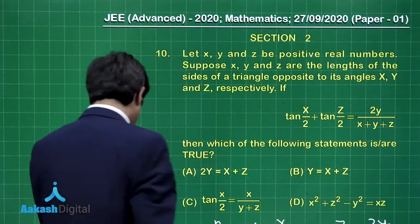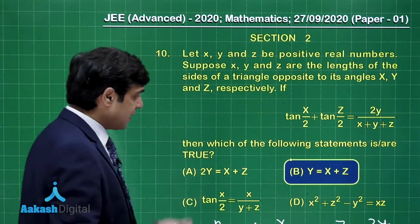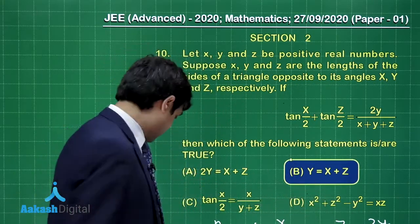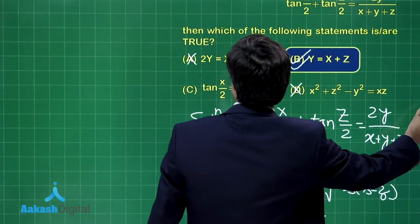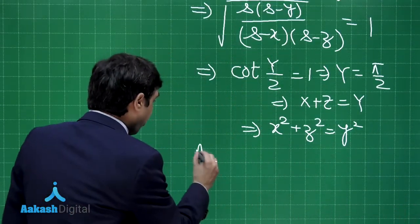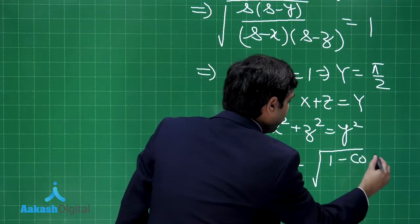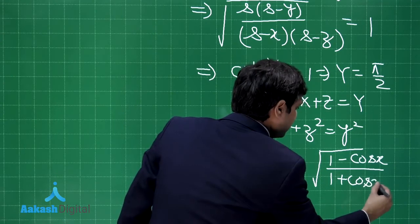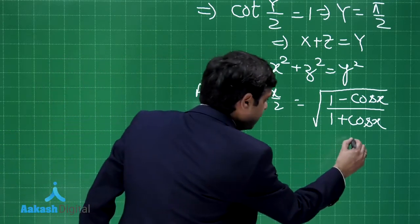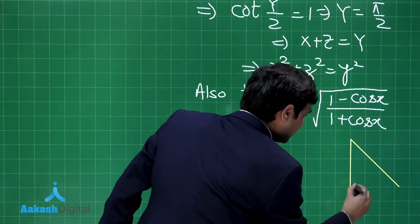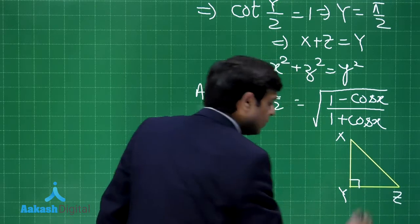From the given options, y = x + z is clearly correct, while option d and option a are not correct. We also need to check option c, which is about tan(X/2). We can write tan(X/2) = √[(1 − cos X)/(1 + cos X)]. The simplest way is to use the triangle, which is right-angled at Y, with sides x, y, z.